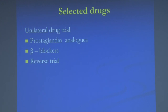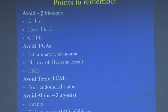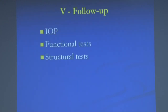First-line medications are prostaglandin analogues and beta blockers. Key contraindications to remember: avoid beta blockers in asthma, heart block, recent MI, and COPD; avoid prostaglandin analogues in inflammatory glaucoma, history of herpetic keratitis, and CME; avoid topical carbonic anhydrase inhibitors in poor endothelial status; avoid alpha-2 agonists in infants, patients on MAO inhibitors, and elderly patients who may feel sleepy and risk falls. Follow-up parameters must be maintained to preserve function and structure.